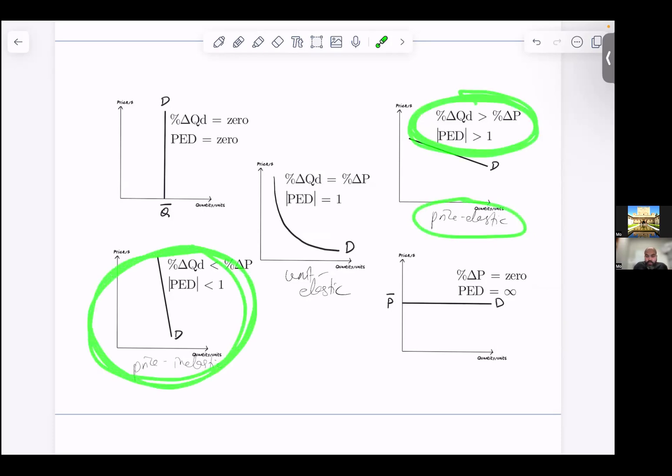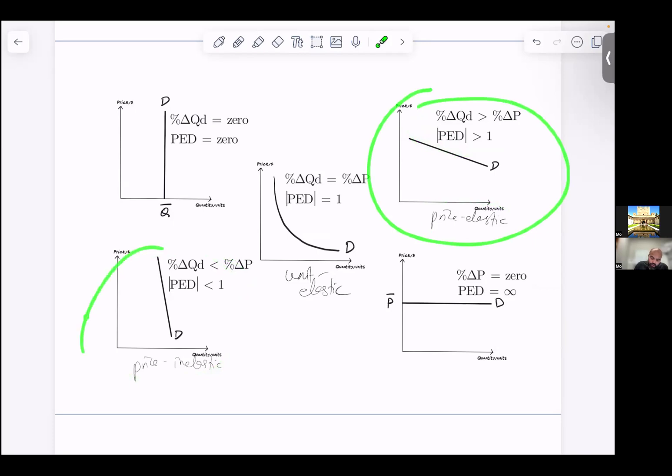In this case, the absolute value of PED will be less than one. These two are the most frequently encountered cases, so most cases demand is either price elastic or price inelastic. And then there are two sort of extreme cases that theoretically we have to know, which is when demand is...